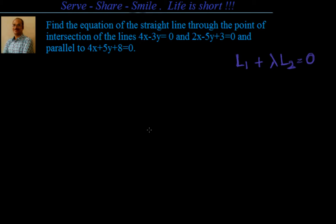We can solve this problem with whatever knowledge we have. We can find out the point of intersection by using any method — substitution, elimination, or cross product method — to find the x and y values. After that you can find the line which is parallel to this and also passing through the point of intersection. That's one way of doing it. Another way we are going to look into is: what is the equation of the family of lines which is passing through a point of intersection of two lines?